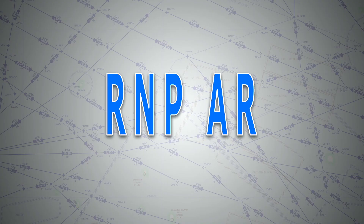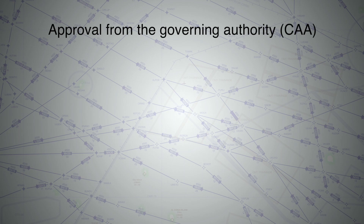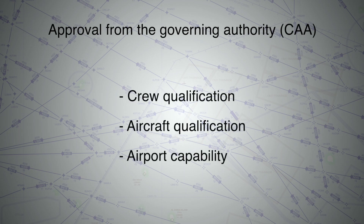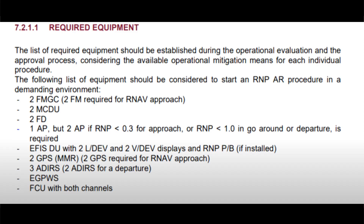Let's put all these into perspective. In order for you to fly an RNP approach, you need the following. First things first, an approval from the governing authority. In order to obtain this approval, you need to be qualified and certified as a pilot to fly such approaches, and obviously you need training. Then the aircraft itself must be certified. In order for the aircraft to be certified, the following minimum equipment must exist: a minimum of two GNSS receivers, two FMGS, two MCDUs, two flight directors, two autopilots if RNP is 0.3 nautical mile for the approach or better, or RNP is less than 1 nautical mile for missed approach, three ADIRS, EGPWS, and FCU.